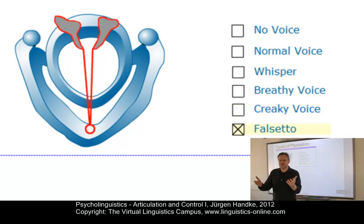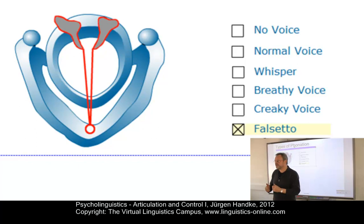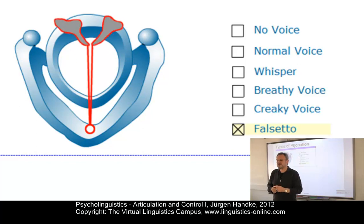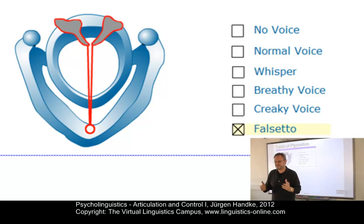Here's a very interesting one — falsetto. Falsetto is a phonation mode where the vocal folds and vocal chords are stretched longitudinally so that they become relatively thin in cross section. Falsetto is primarily heard as a phonatory setting in singing. Do you remember the Bee Gees? Saturday Night Fever — night fever.